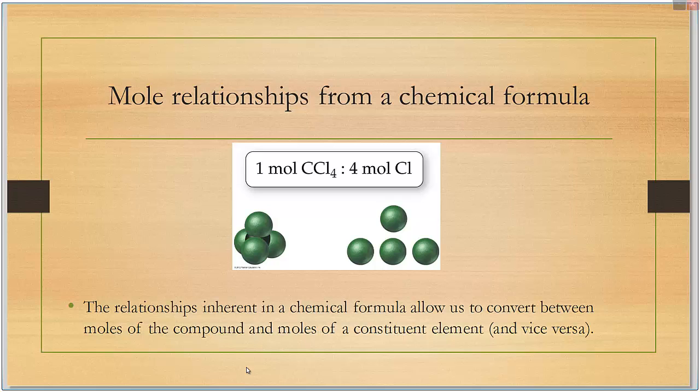When we're looking at the atoms per molecule, we can also look at the moles per molecule because of Avogadro's number. The relationship is inherent in the chemical formula that allows us to go between the moles of one to moles of the other.